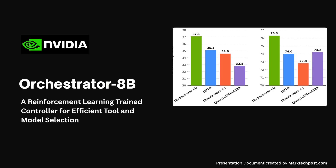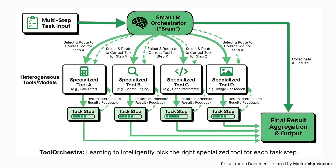How can an AI system learn to pick the right model or tool for each step of a task, instead of always relying on one large model for everything? NVIDIA researchers release Tool Orchestra, a novel method for training a small language model to act as the orchestrator — the brain of a heterogeneous tool use agent.